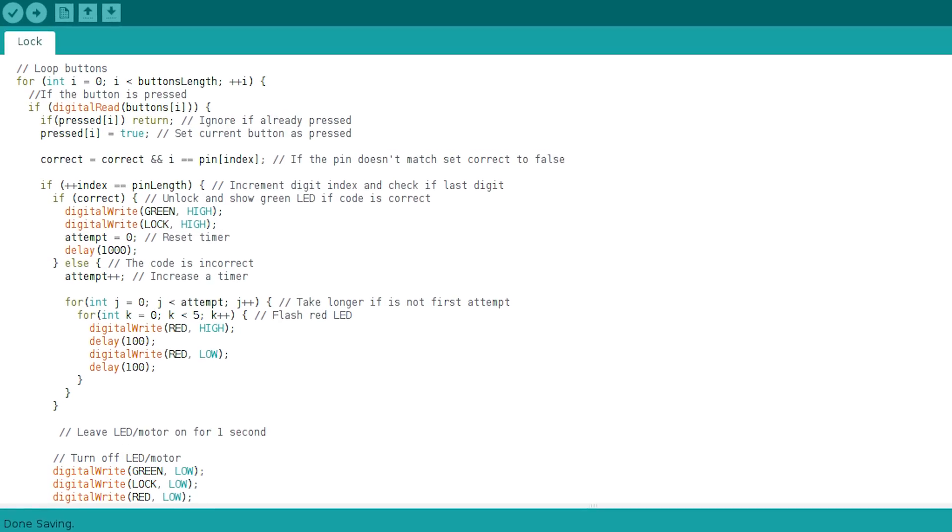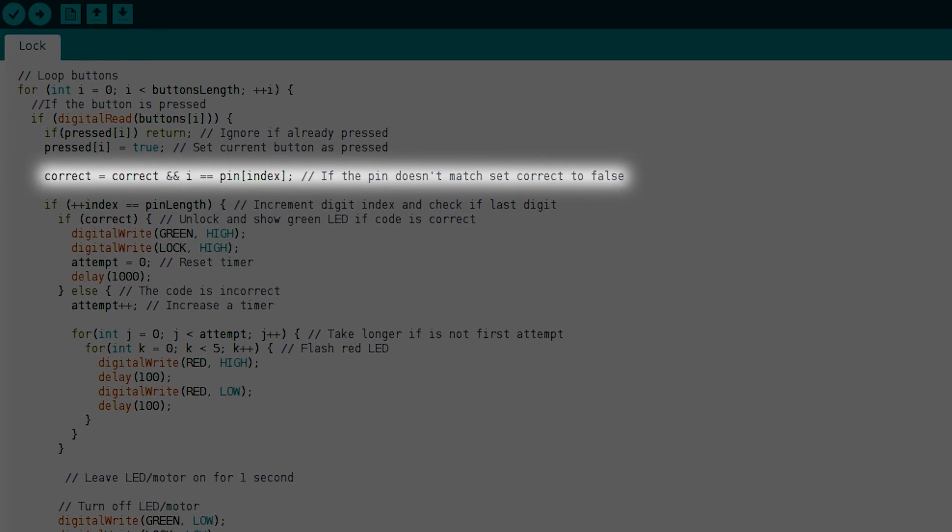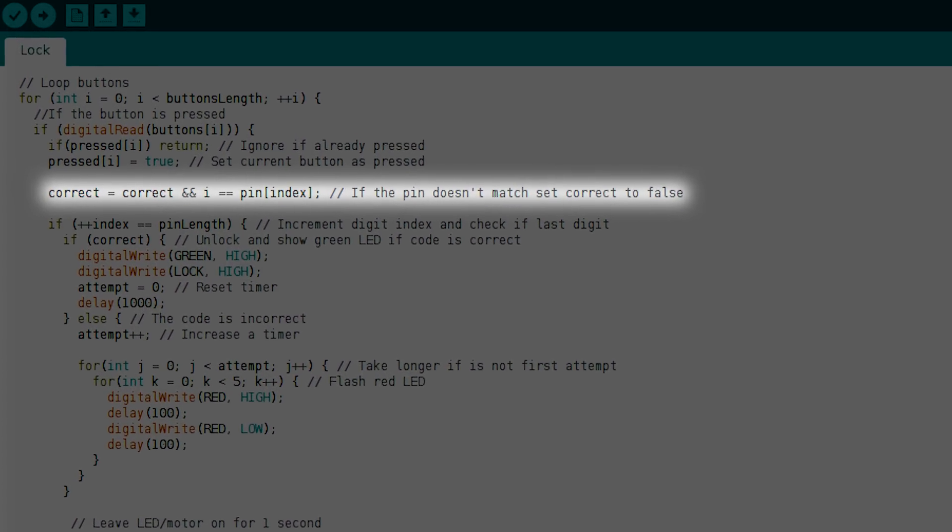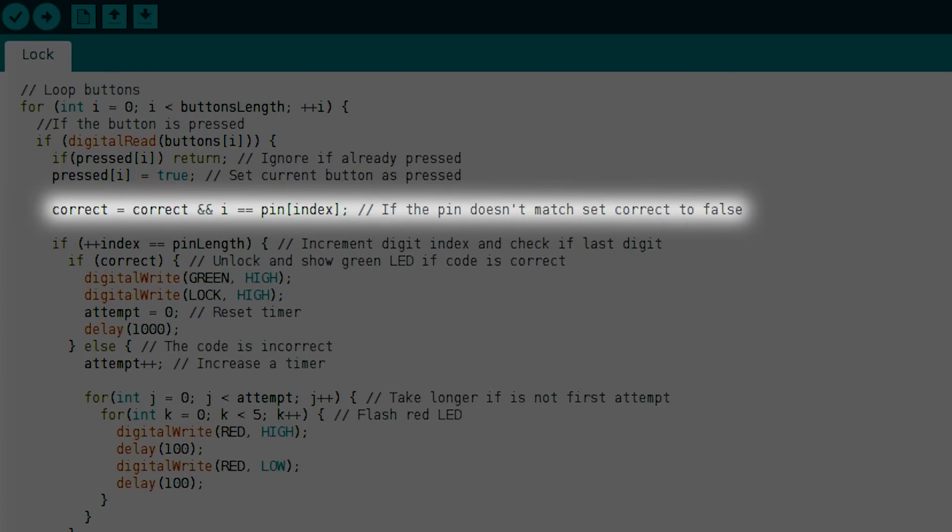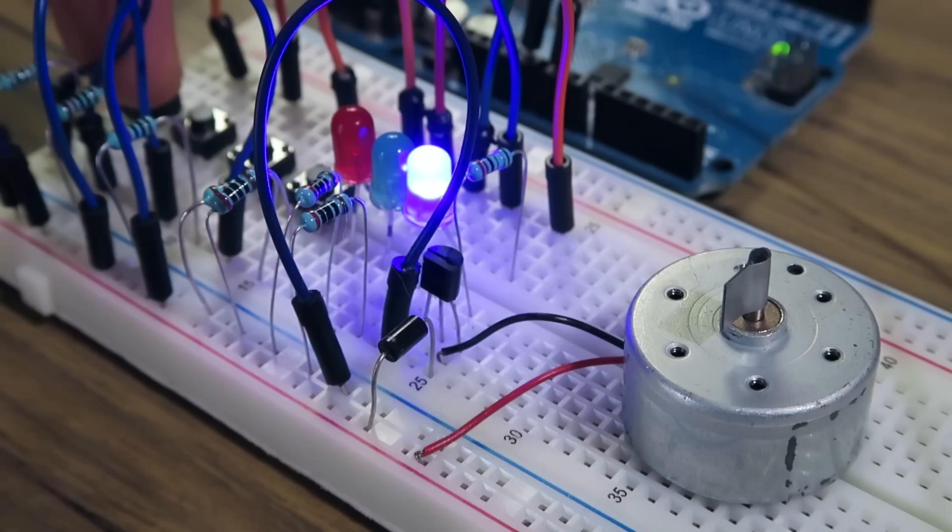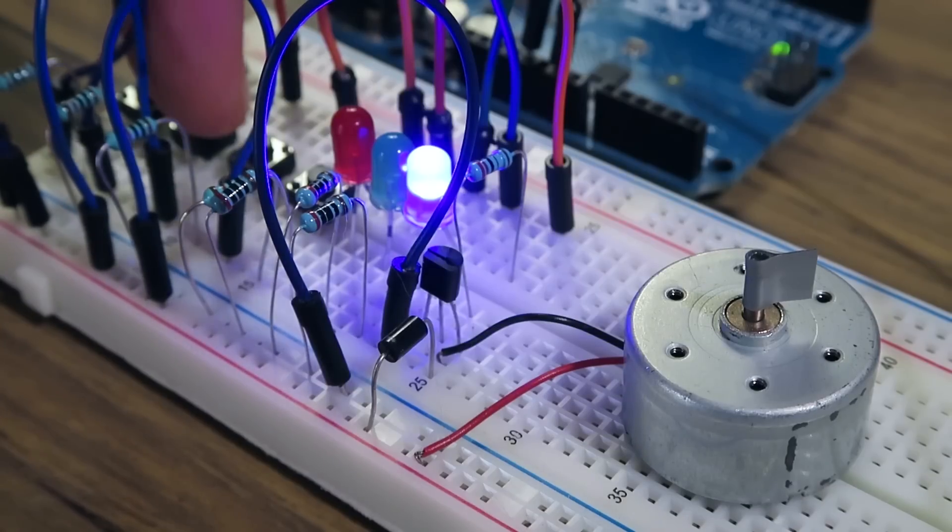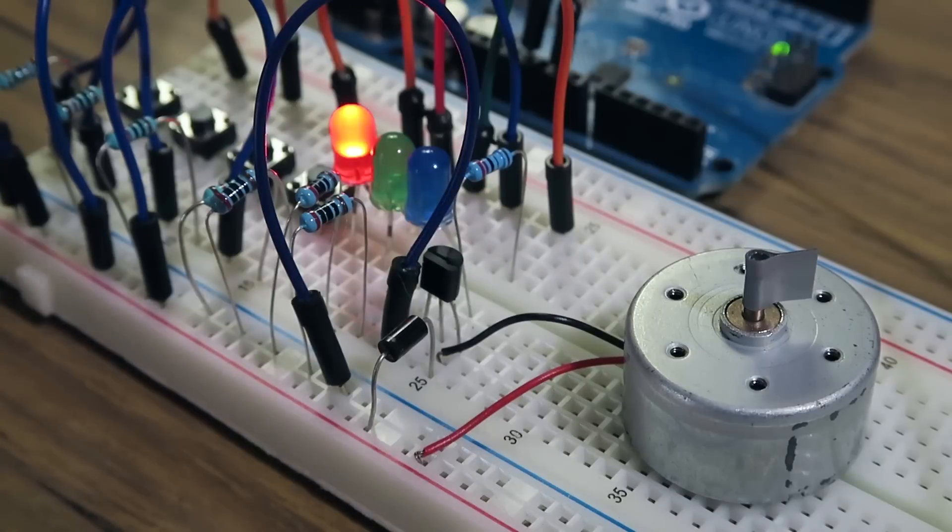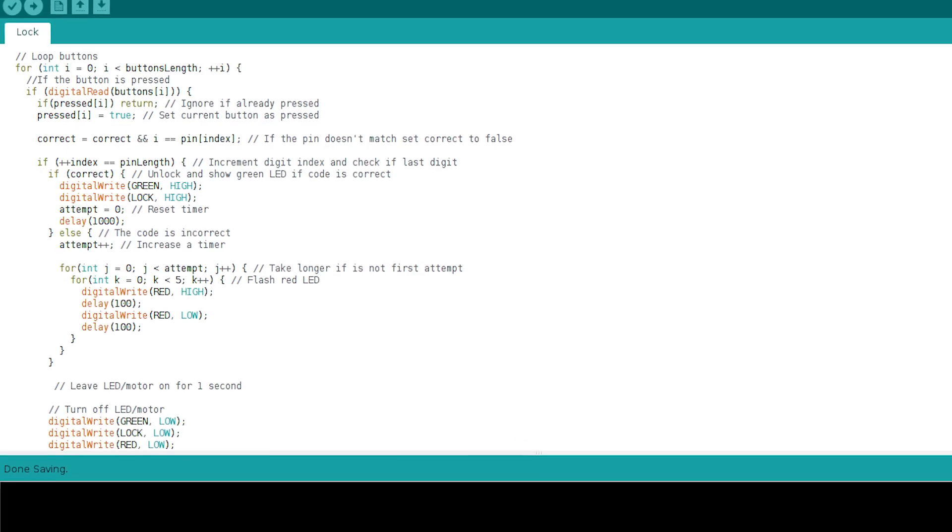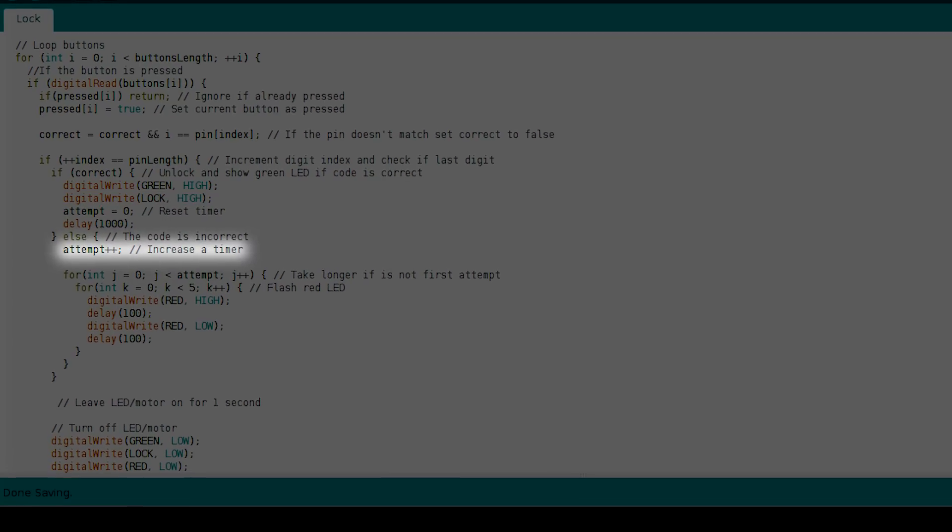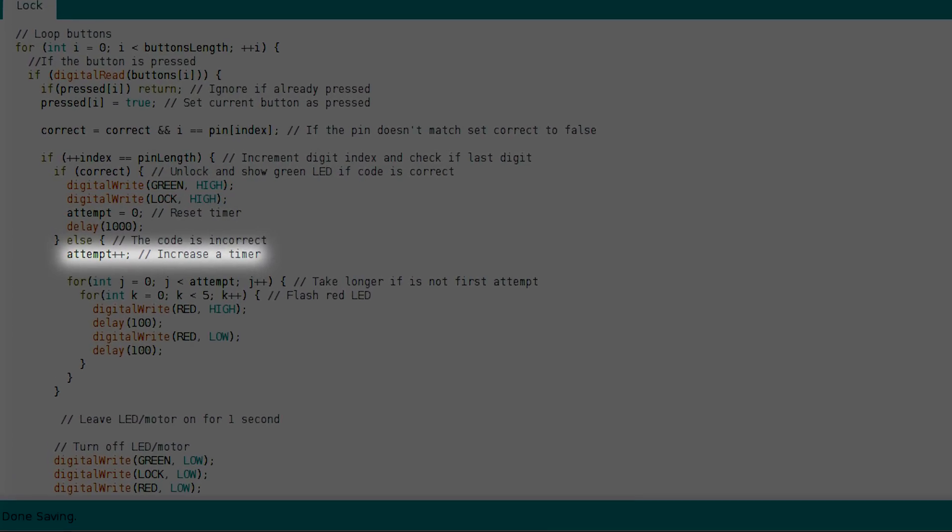Other than this, the code is very simple. On each button press, we check if it matches the current digit of the pin. If the button doesn't match, we set a variable to false. When the last digit is checked, we unlock the door and show the green LED if the variable is true, or show the red LED if it's false. On an incorrect combination, we also increase a timer to prevent someone brute-forcing all possible combinations.